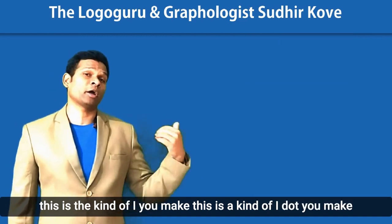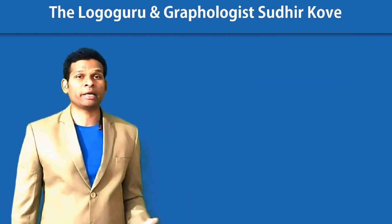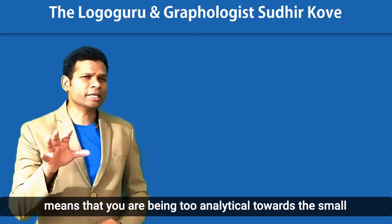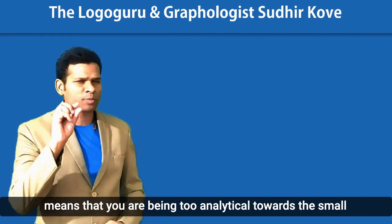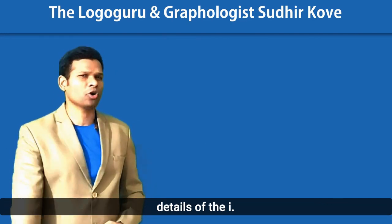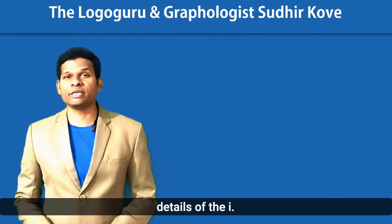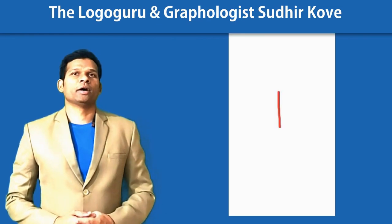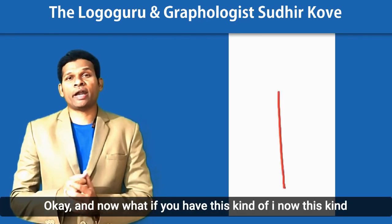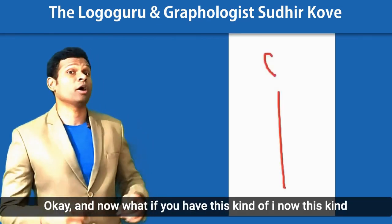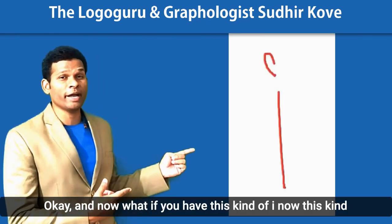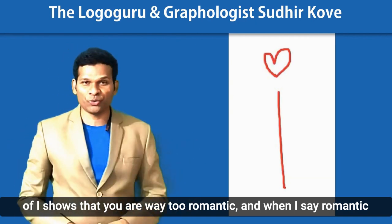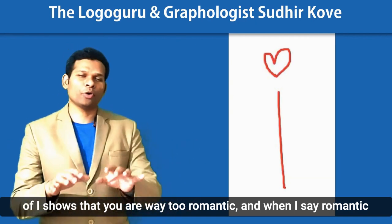Now, if you have this kind of i-dot — a dash or line — it means that you are way too analytical towards the small details of the i.